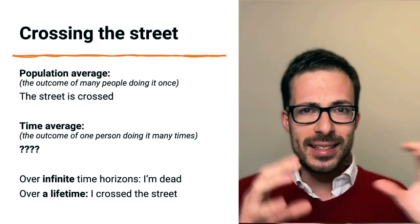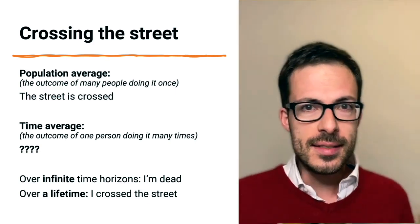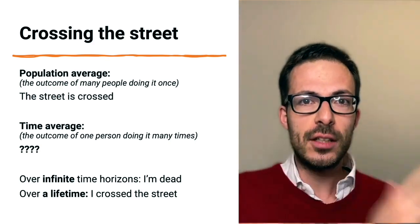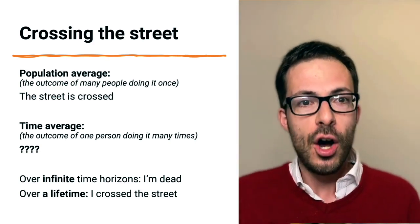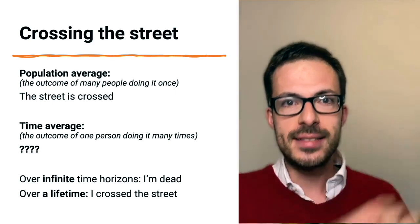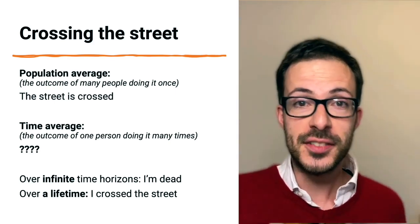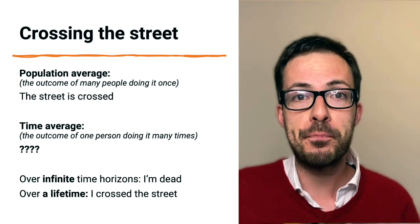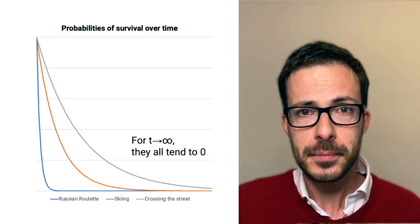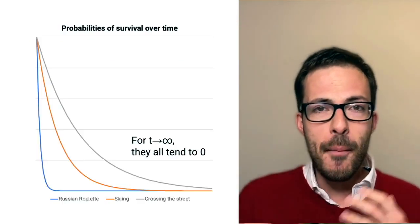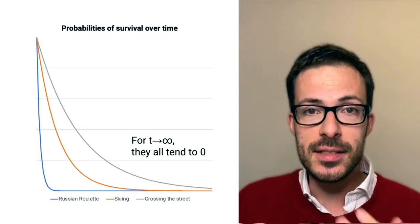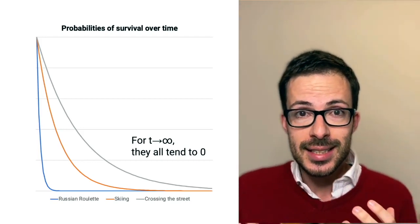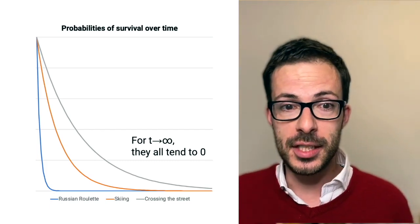So we get an apparent contradiction here. Crossing the street is both an ergodic and a non-ergodic activity, depending on the time frame we consider. Over an infinite time frame, it's a non-ergodic activity. But over a finite time frame, for example, a lifetime, it becomes an ergodic activity. And we can see this, the more practical activities we consider, the more we get the same apparent contradiction.